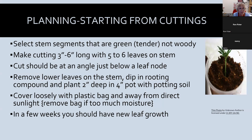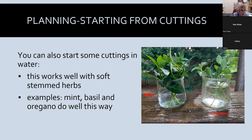You can also root cuttings in water before putting them in soil. This is mostly done with soft-stemmed or leafy green herbs like mint, basil, and oregano. You want roots about two inches long with about 10 to 15 roots on those stems before transferring to soil.